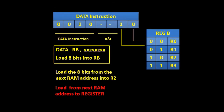We then looked at the data instruction, given by 0, 0, 1, 0. We don't care what the next two bits are, and the last two bits are REG B — so we can choose register R0, 1, 2, or 3. In assembly language it's written as DATA RB, followed by 8 bits, meaning we load the 8 bits from the next RAM address into register RB.